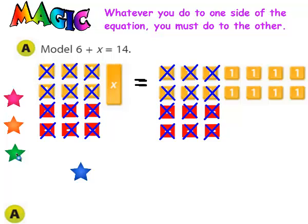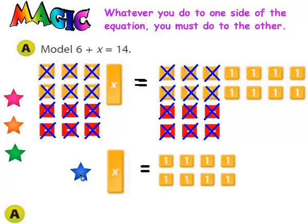Once you get rid of the zero pairs, they're gone. So the answer to this problem is x equals 8. When you're through solving it, plug your answer into the original problem and make sure it works. 6 plus 8 does equal 14.